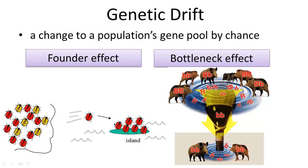In this lesson, we will define genetic drift and two types of genetic drift: the bottleneck effect and the founder effect. What is genetic drift, and what does it have to do with evolutionary theory?